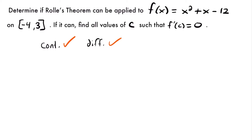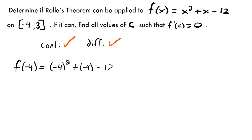Now the next thing we want to do is check whether both endpoints have the same y-value — the same height. So we'll plug each endpoint into our original function. f(-4) = (-4)² + (-4) - 12 = 16 - 4 - 12 = 0.